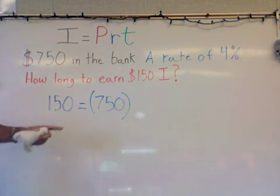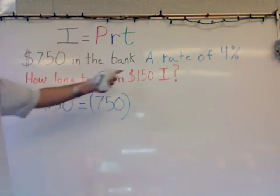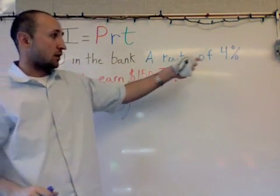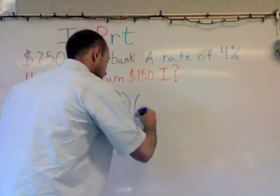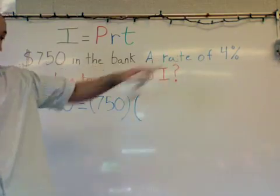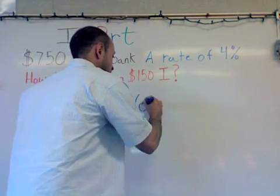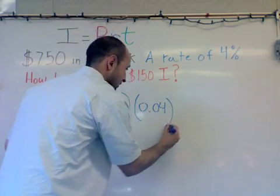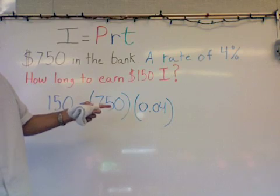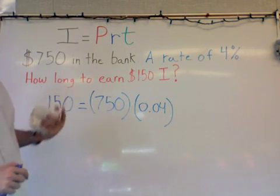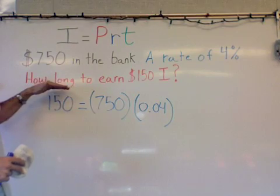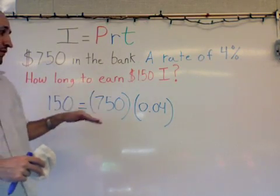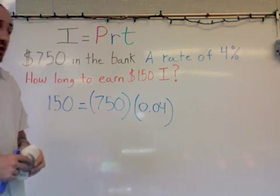We want to multiply that by the rate. We have the rate this time. The bank is giving us a rate of 4%. So I want to turn that 4 into a decimal. We know that it becomes 0.04. And then the last step, what I'm actually trying to solve is the amount of time. How long does it take to earn $150? So we don't know that, so it just remains T.